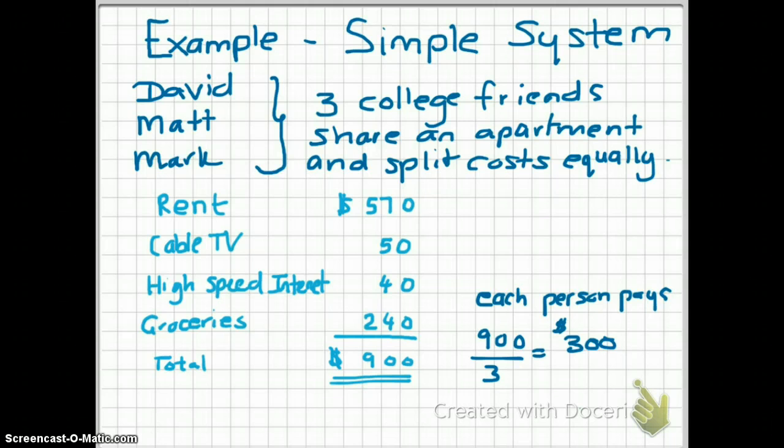Everything goes along smoothly for a while and then after a few months, David comes and says, this is not working. I think I'm paying too much for my share of expenses. I never eat here because I always eat at my girlfriend's house and I think $300 a month is just too much. Can we take a look at our allocation system?